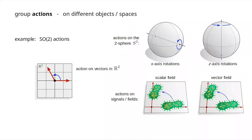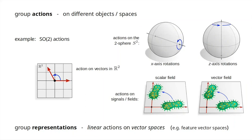I will also talk about group representations. Representations are linear group actions on vector spaces. We are interested in group representations because in deep learning we usually have feature vector spaces and we look at linear group actions.